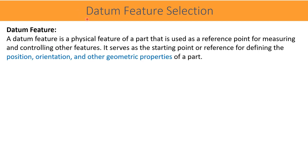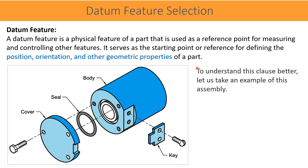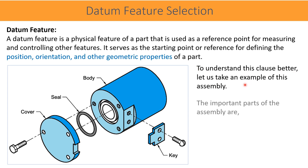A datum feature is a physical feature or physical portion of a part that is used as a reference point for measuring and controlling other features. It serves as the starting point or reference for defining the position, orientation, and other geometric properties of a part. To understand this clause better, let us take an example of this assembly.